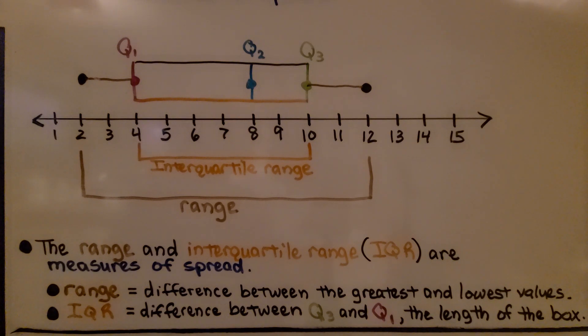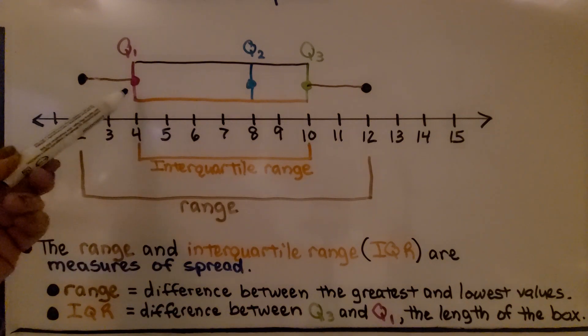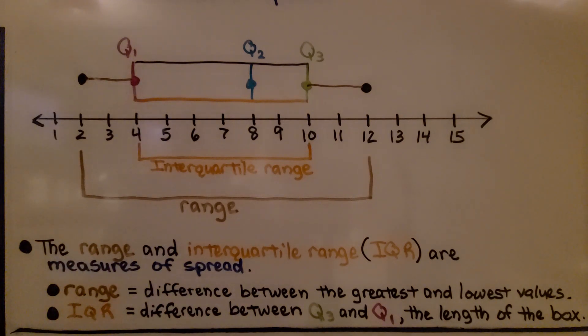The range is the difference between the greatest and lowest values. The IQR is the difference between Q3, the third quartile, and Q1, the first quartile, the length of the box.